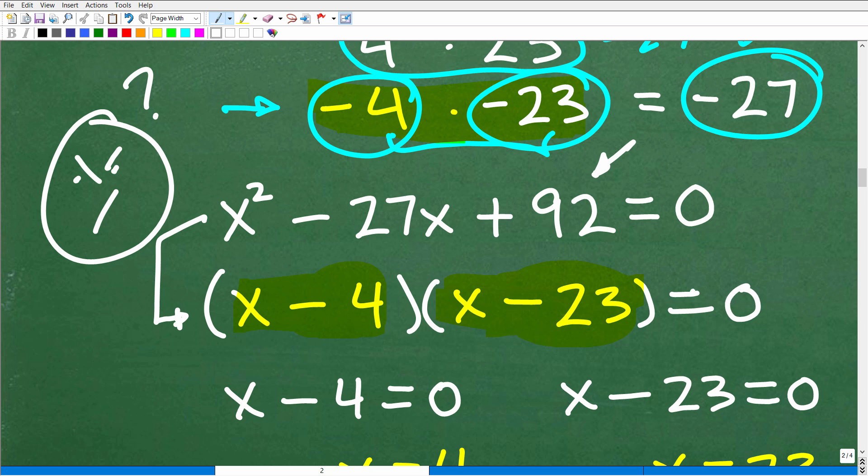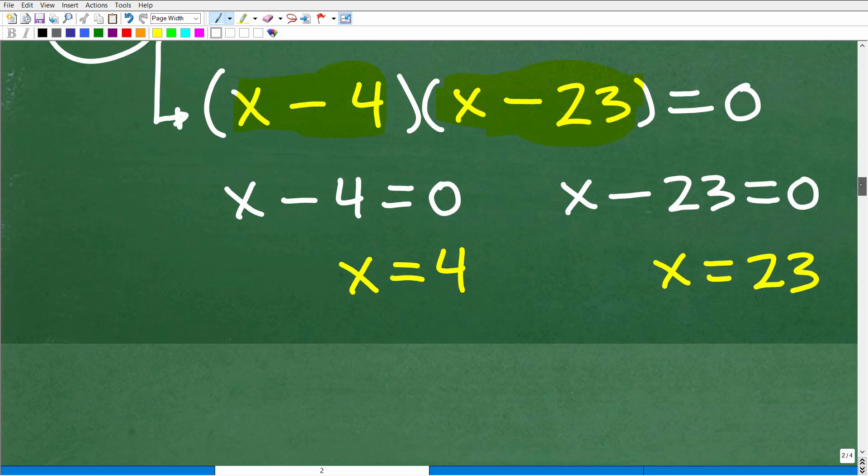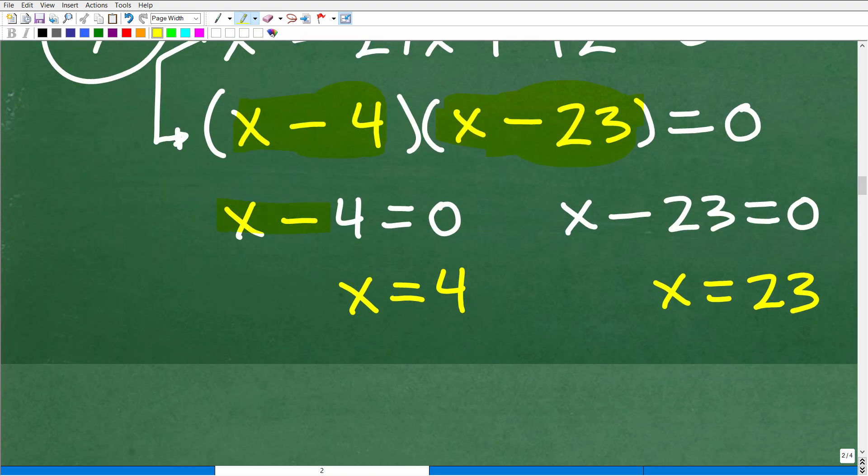All right. So here we were able to factor this quadratic trinomial into these two linear factors, X minus four, X minus four times X minus 23. And this is, of course, equal to zero,